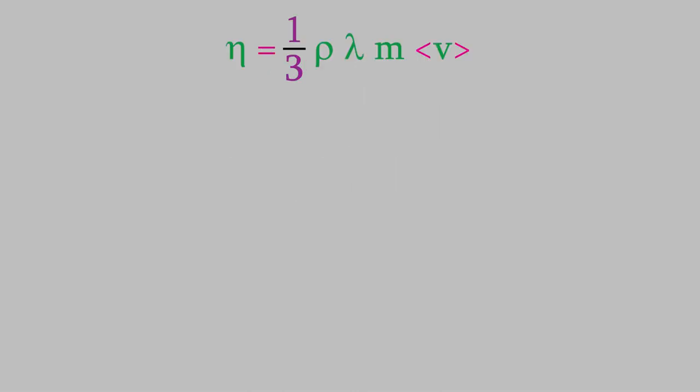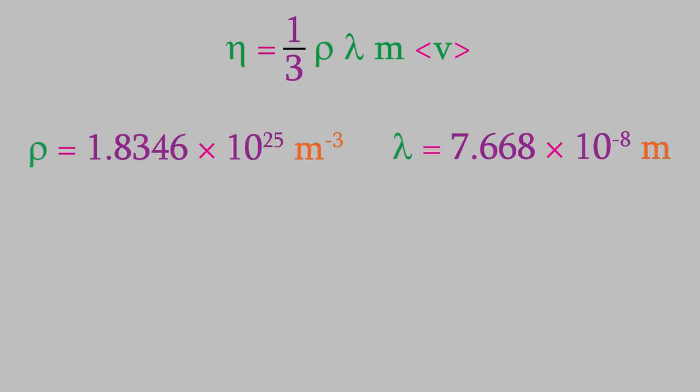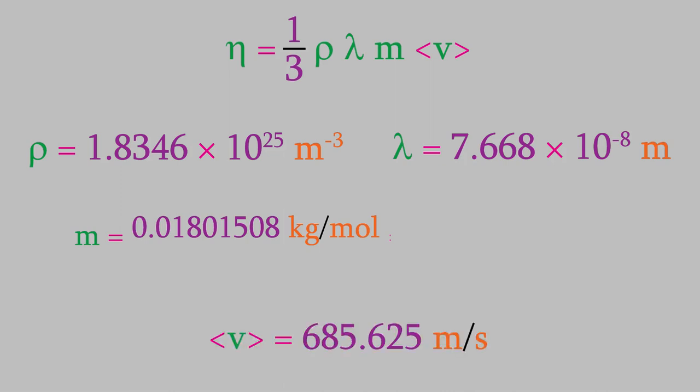Earlier, we looked at a sample of water vapor and determined its number density, its mean free path, its mass, and its average velocity. Let's use those to find out the viscosity of the water.